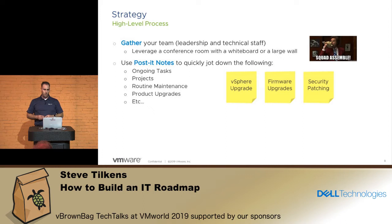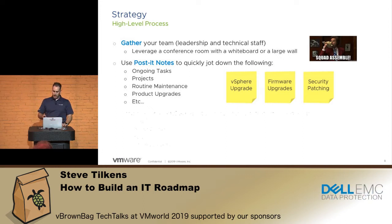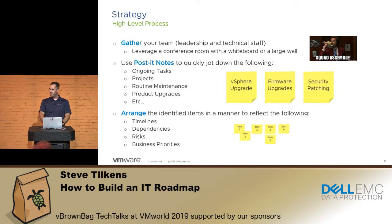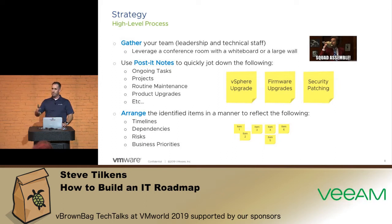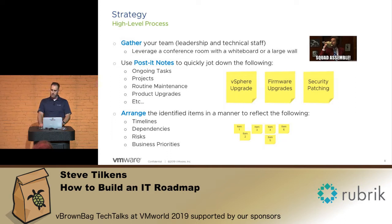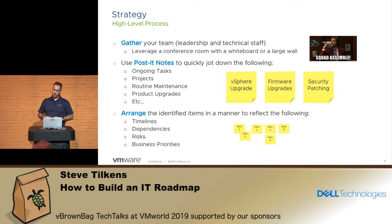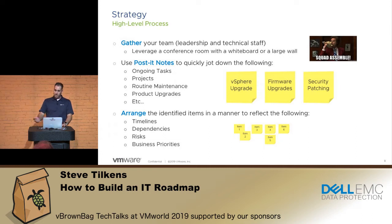Don't worry about putting these in any logical order at first — just get them written down and on the wall. Then the next step is putting them in a particular order, in some kind of chronological sequence. You'll identify dependencies — for instance, if you need to do a vSphere upgrade from 6 to 6.5 but your hardware doesn't support 6.5, obviously you need to do a hardware refresh first. You'll also build in business priorities. I used to support an accounting firm that did taxes, and during tax season they said no changes — so we focused on enablement. The roadmap needs to account for those business constraints.